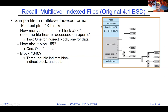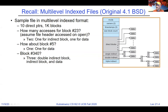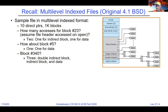Since the first 10 blocks are direct, block number 23 would be in the singly indirect region and require two block reads. Block 340 would be in the doubly indirect region — you'd read the double indirect block, then the direct block, then the data. In the original BSD there were 1k blocks and 4-byte pointers, giving 256 data blocks within an indirect block. The decision to go from 10 to 12 direct blocks was based on data — they decided they needed a couple more direct pointers.